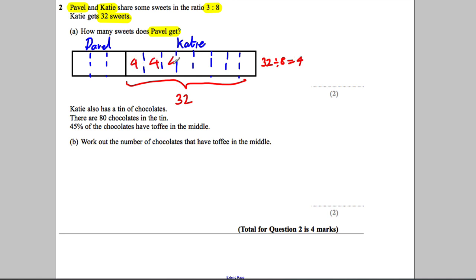So similarly, 4 must go in each of these boxes, so clearly Pavel gets 3 fours which are 12.